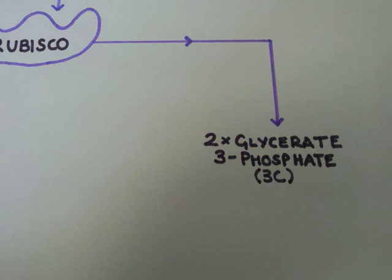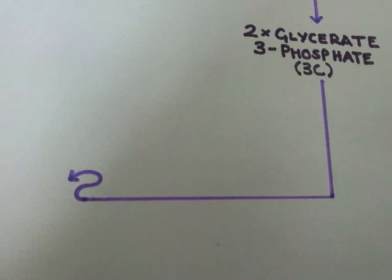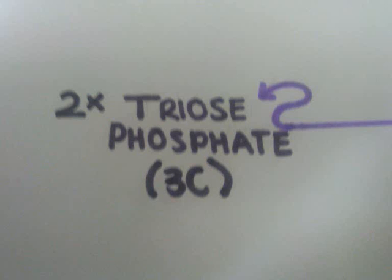The product of this reaction is two molecules of a 3-carbon compound, glycerate 3-phosphate. The carbon dioxide has now been fixed.